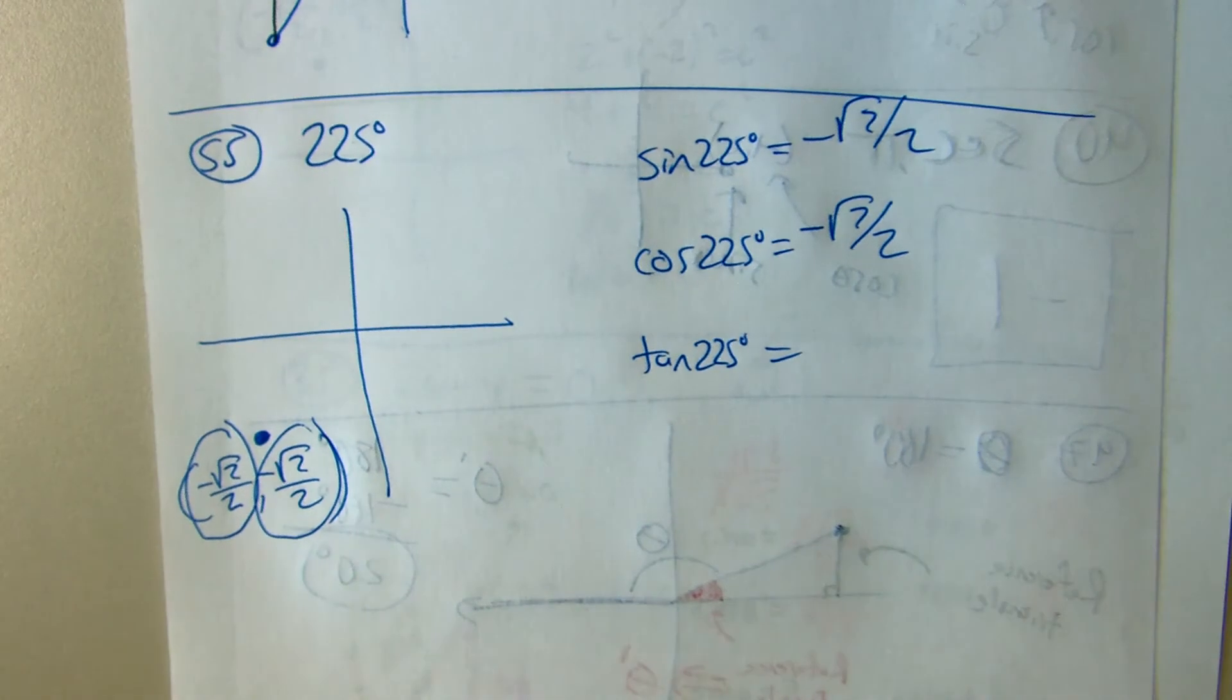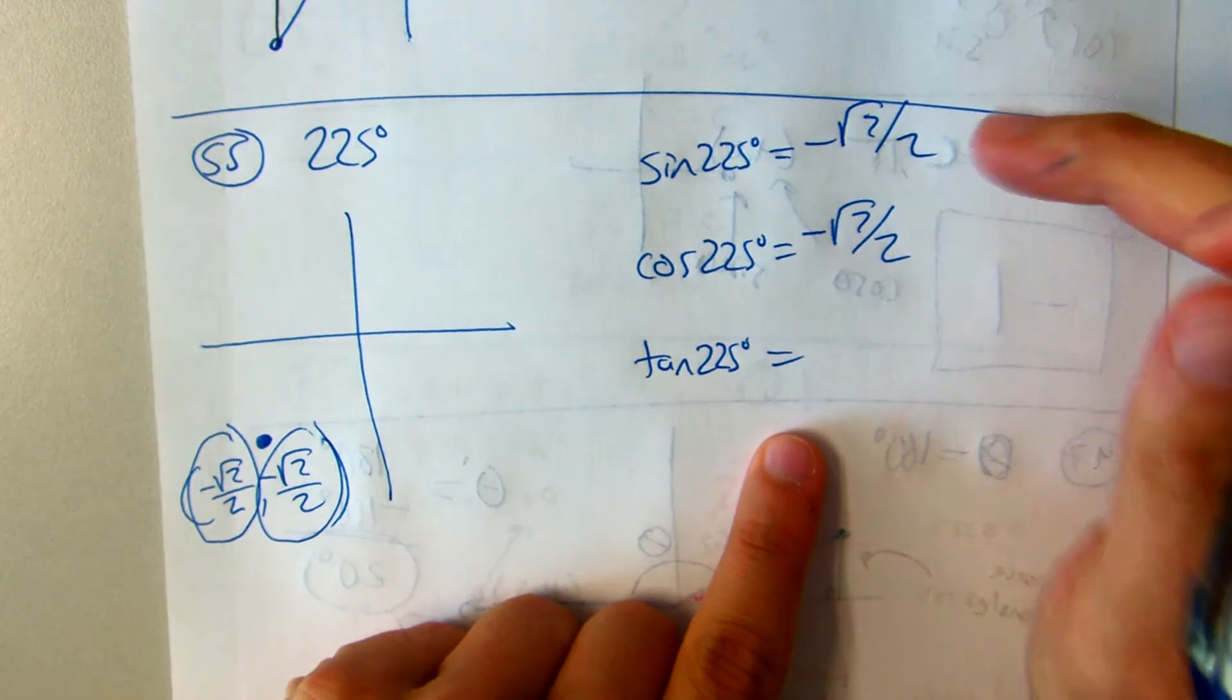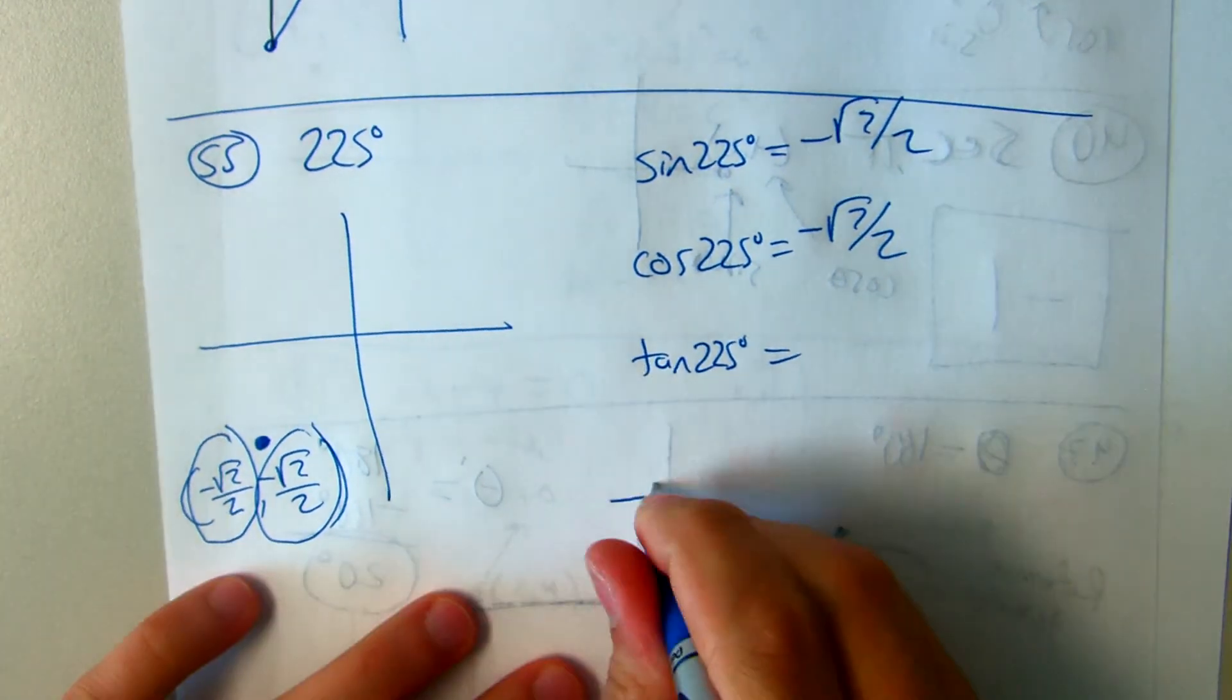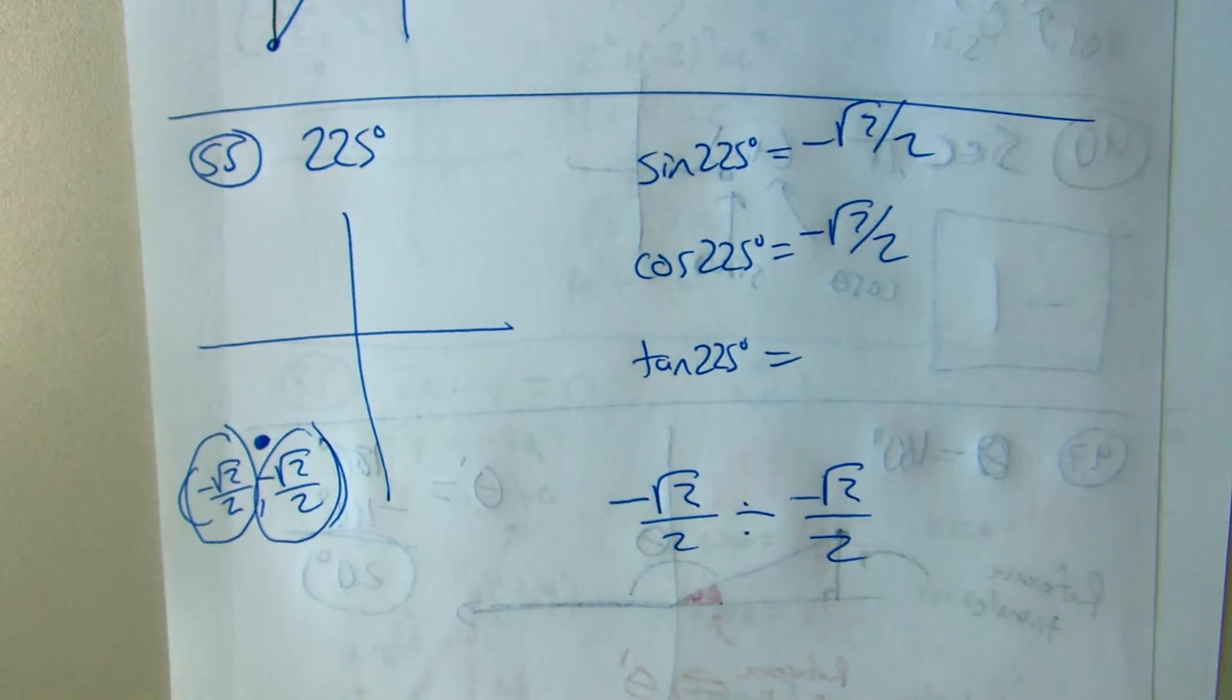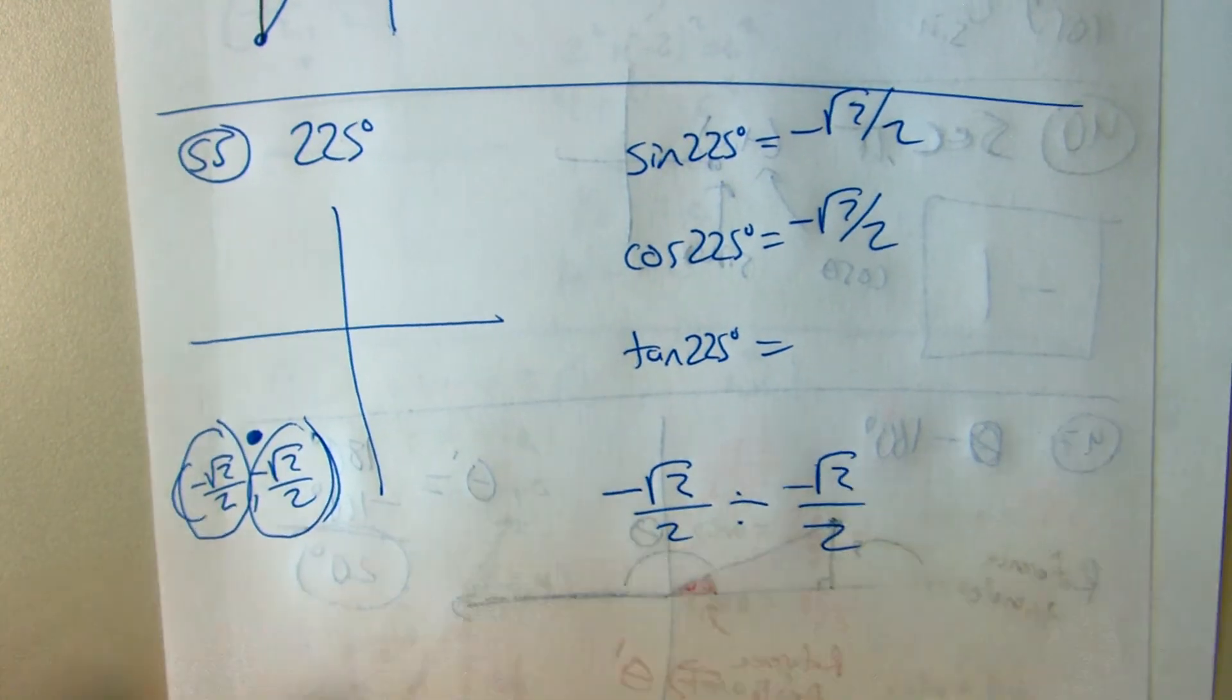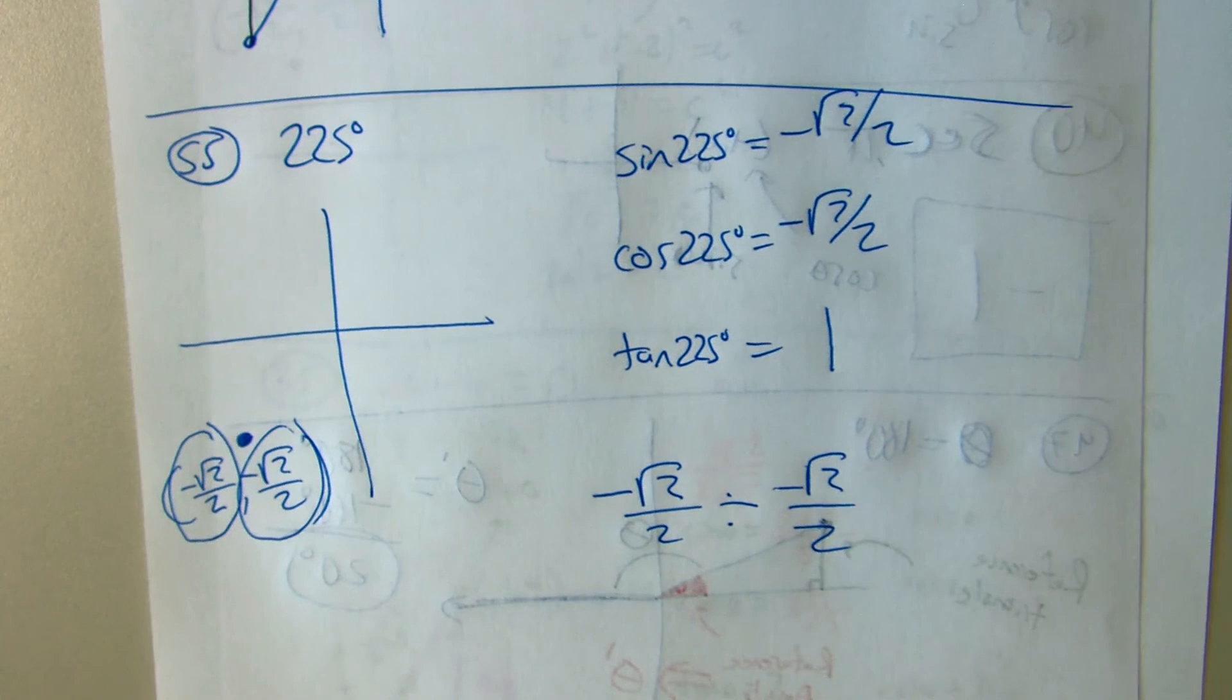We don't generally memorize tangent values, or at least not this early in the year, because we can always find tangent by doing sine divided by cosine. But what's going to happen if I do sine divided by cosine? Anything divided by itself is going to be one. So why bother doing all that fraction work?